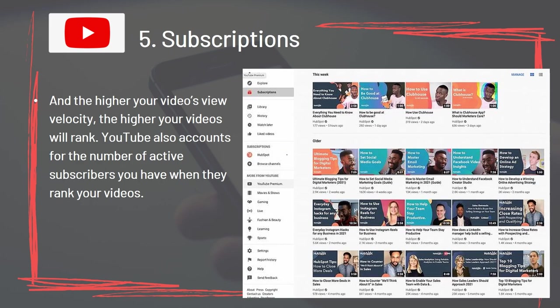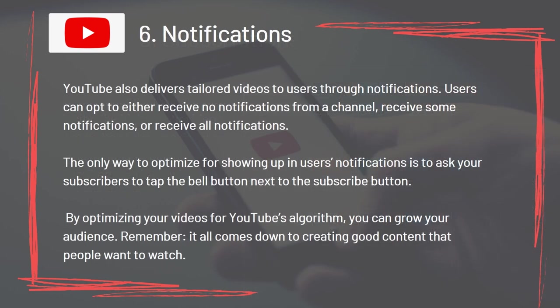YouTube also accounts for the number of active subscribers you have when ranking your videos. YouTube delivers tailored videos to users through notifications. Users can opt to receive no notifications, some notifications, or all notifications from a channel. The only way to optimize for showing up in users' notifications is to ask your subscribers to tap the bell button next to the subscribe button. Remember, it all comes down to creating good content that people want to watch.